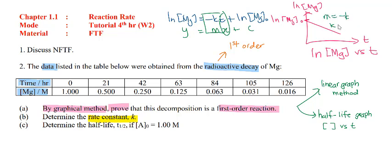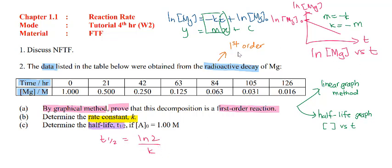To find the rate constant, calculate the negative gradient from the graph. For part C, to determine the half-life given initial concentration of 1 molar, use the first order half-life formula: T-half = ln2 / K. Substitute the K value you obtained in part B. Note that for first order reactions, T-half does not depend on concentration, so we do not use A₀ in the formula.